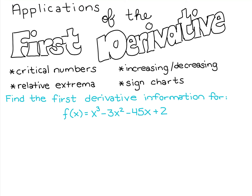In this video, we'll be reviewing what the first derivative information gives us. We'll be finding critical numbers, which is where the first derivative equals 0. At those critical numbers, you may or may not have a relative max, min, or neither, so we'll be able to find relative extrema. We'll be looking at the sign chart around those critical numbers to figure out where we're increasing and decreasing.